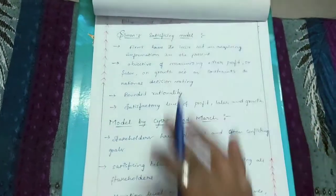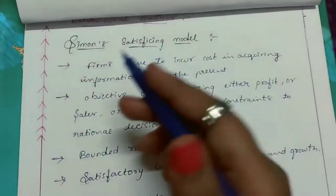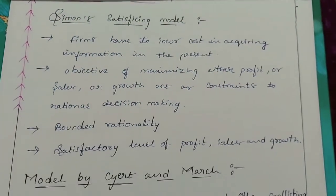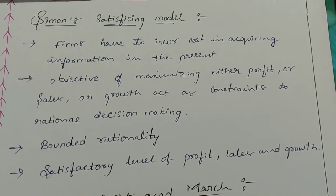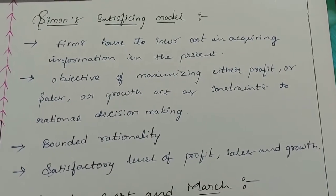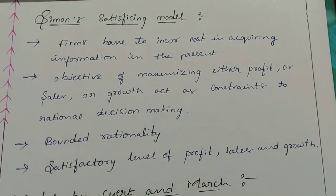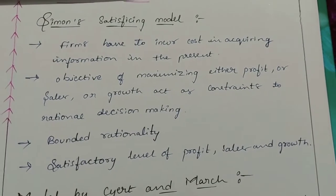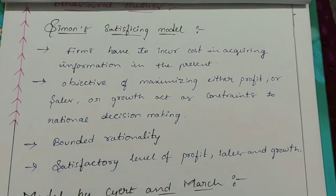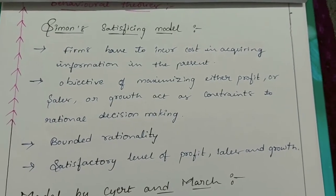Let me tell you about a few behavioral theories. Number 1: Simon Satisfying Model. The elements of Simon's Satisfying Model are: firms have to incur cost in acquiring information in the present; objectives of maximizing either profit, sales, or growth act as constraints to rational decision making; and bounded rationality and satisfactory level of profit, sales, and growth.